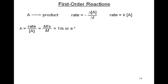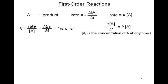Therefore, the unit of K comes out to be 1 over seconds, or seconds to the minus 1. These are the units of K for a first order reaction when you only have one single reactant. Since rate equals minus the change in A over delta T, but rate also equals K times A, then K times A must equal negative delta A over delta T, where A is the concentration of A at some time T.